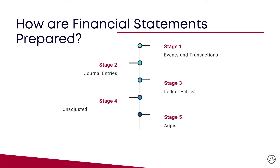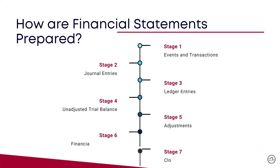Because of the revenue and expense recognition principles, the accounts in the trial balance often need to be adjusted. Once adjustments are made, we are ready to prepare the complete set of financial statements, which includes the income statement, followed by a balance sheet, and a cash flow statement. It also includes statement of changes in retained earnings and notes to financial statements. Then the accounting books are closed for the period and reviewed or audited by an independent auditor, if applicable.